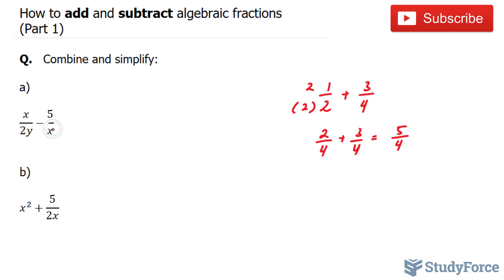To make this 2y into an x and to make this x into a 2y, I'll multiply the denominator and the numerator of this fraction by x and the denominator and numerator of this fraction by 2y. Let's go ahead and do that, I'll rewrite the question here. So like I said, I'll multiply this by x and I'll multiply this and this by 2y.